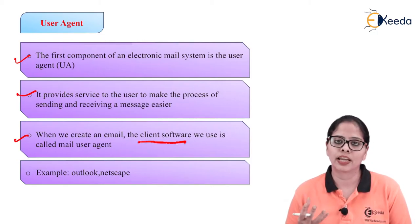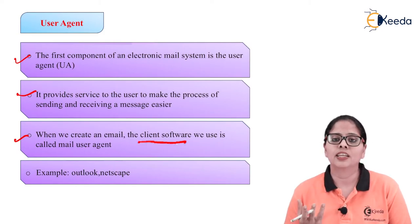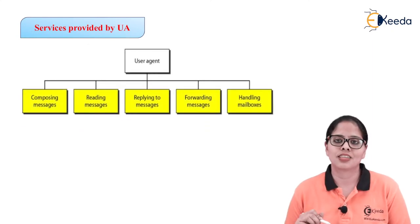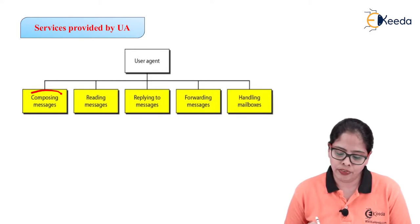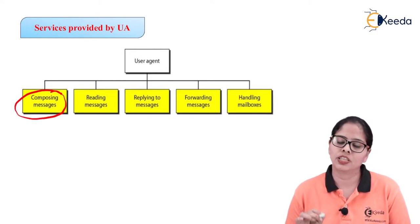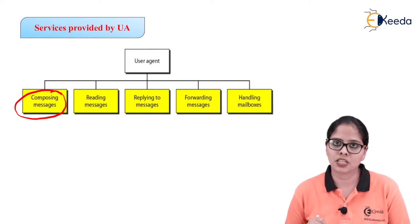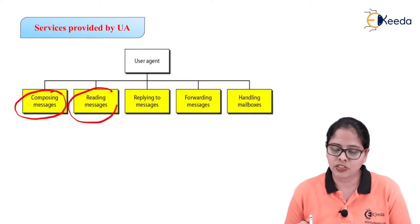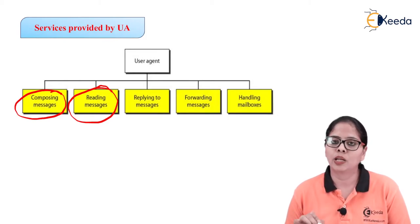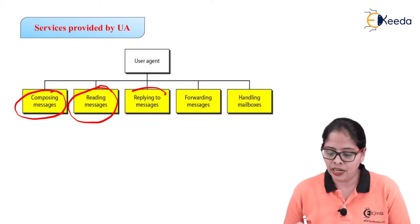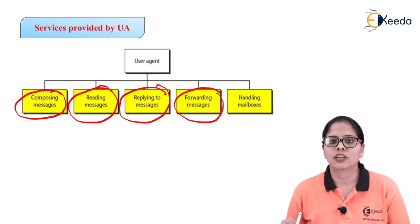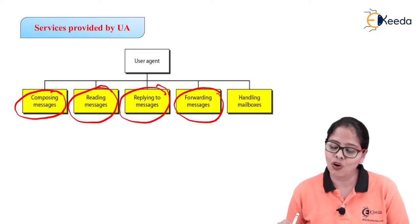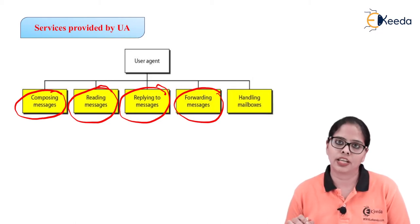With the help of the mailbox, you can create the message, you can send the message, you can receive the message. The user agent provides composing of the message, reading of the message, replying to the message, forwarding of the message, and handling the mailbox. All these facilities are provided by the user agent.